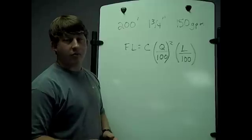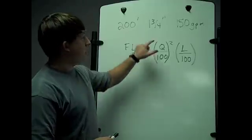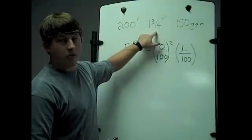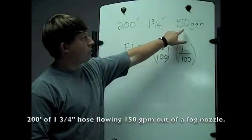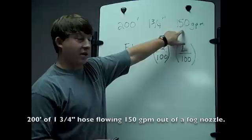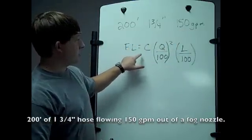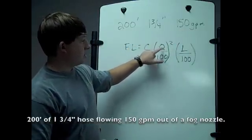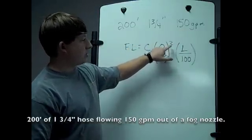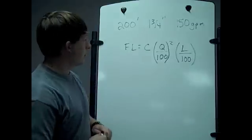For example, I'm going to use 200 feet of inch-and-three-quarter hose line flowing 150 gallons per minute out of a fog nozzle. I'll write down the formula: friction loss equals C times (Q divided by 100) squared, times (L divided by 100).